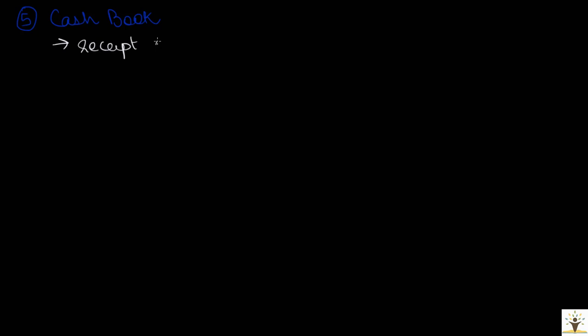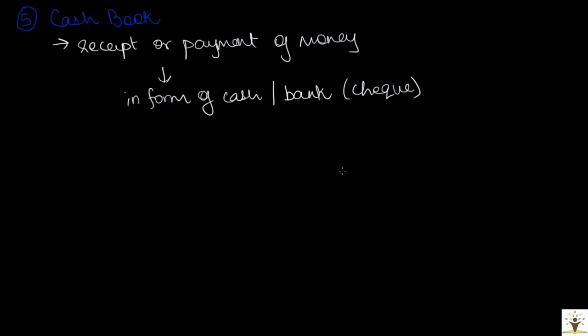The fifth book is the cash book. This book is used to record all transactions that involve receipt or payment of money in the form of cash or through the bank account. For any transaction where the business receives or pays money, that transaction is recorded in the cash book. This is why cash sales and cash purchases are not recorded in the sales day book and purchase day book — since they involve cash, they are recorded in the cash book directly.